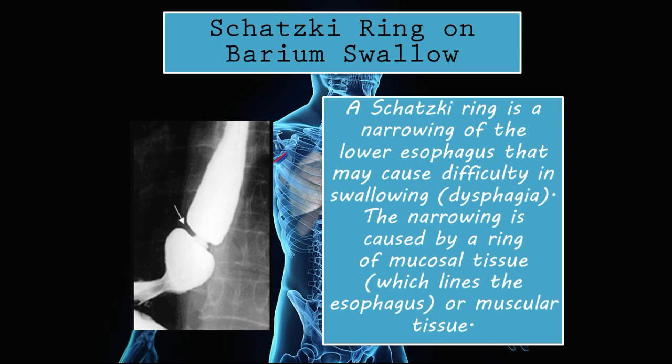Schatzki ring on barium swallow: a Schatzki ring is a narrowing of the lower esophagus that may cause dysphagia. The narrowing is caused by a ring of mucosal or muscular tissue lining the esophagus. Schatzki rings are usually found in the lower part of the esophagus, and they typically appear as a very clean, neat, circular ring on barium swallow.